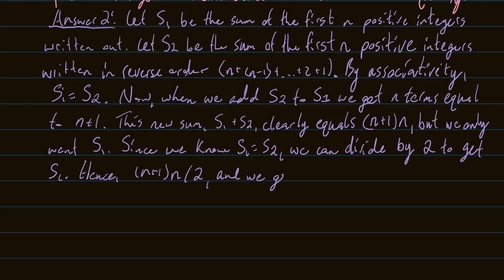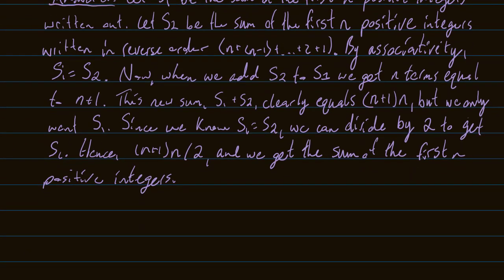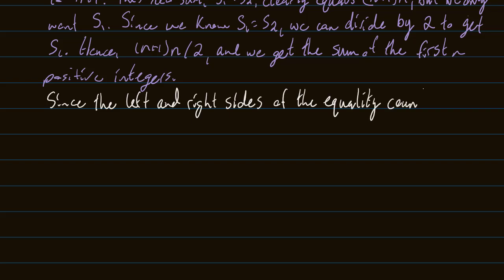I mean, guys, I think that this is pretty cool. I think it's awesome that this equality is true. But we're not done with the proof yet. So we showed Answer 1 will answer our question: what is the sum of the first n positive integers? And Answer 2 also answers it. So now how am I going to finish off? Since the left and right sides of the equality count the same thing, they must be equal. And that is the end of our combinatorial proof.